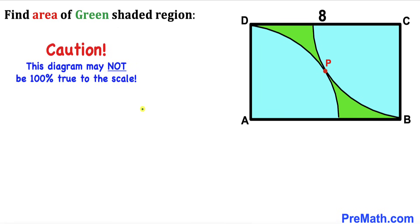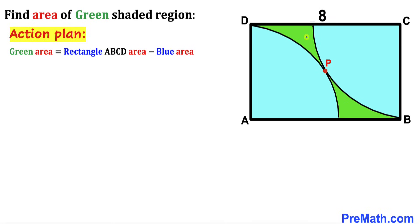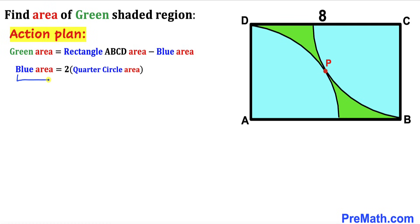Please keep in mind that this figure may not be 100% true to scale. Let's get started with the solution. Since we are interested in calculating the area of the green shaded region combined, we can observe that this green area equals the area of rectangle ABCD minus the blue shaded area, where the blue region equals the area of the two quarter circles combined.